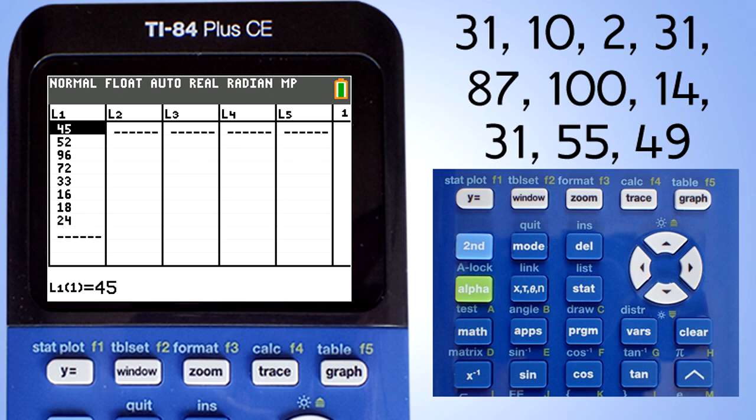Here is a quicker way to clear a list. Move the cursor up to the L1 here. Press the clear button here. Then use the down arrow button to move the cursor back down. Now the L1 list is cleared.